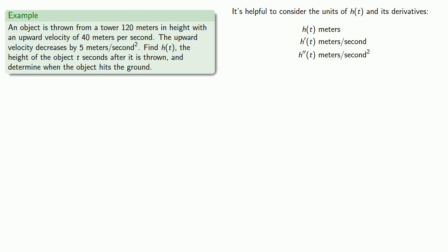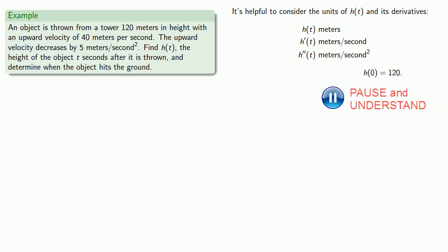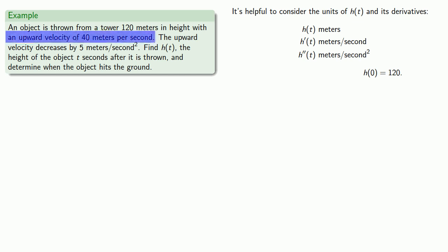So we have to figure out what value of t to use. Since t indicates the number of seconds after the object is thrown, and the object is thrown from a tower 120 meters in height, that must mean that when we throw the object at t equals 0, the height must be 120 meters. So h of 0 equals 120. Likewise, the object is thrown with an upward velocity of 40 meters per second, so at t equals 0, its velocity is 40 meters per second, giving us h prime of 0 equals 40.